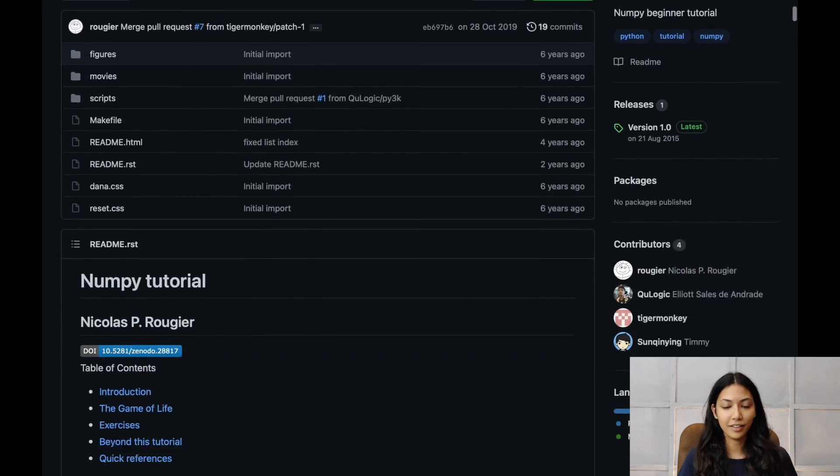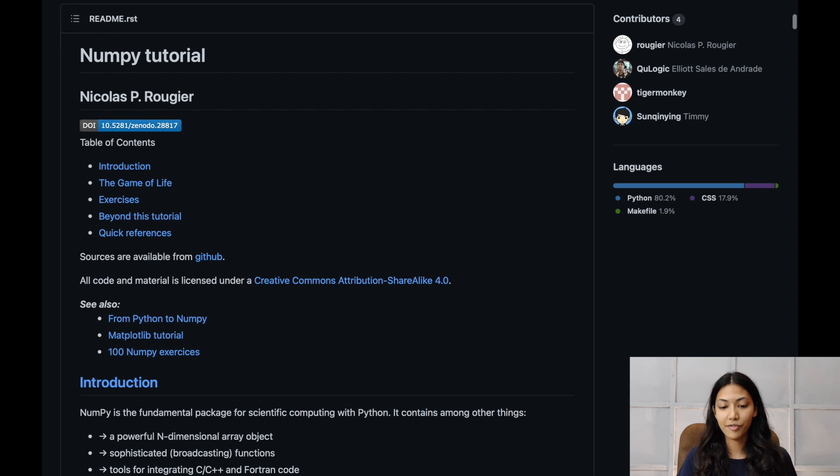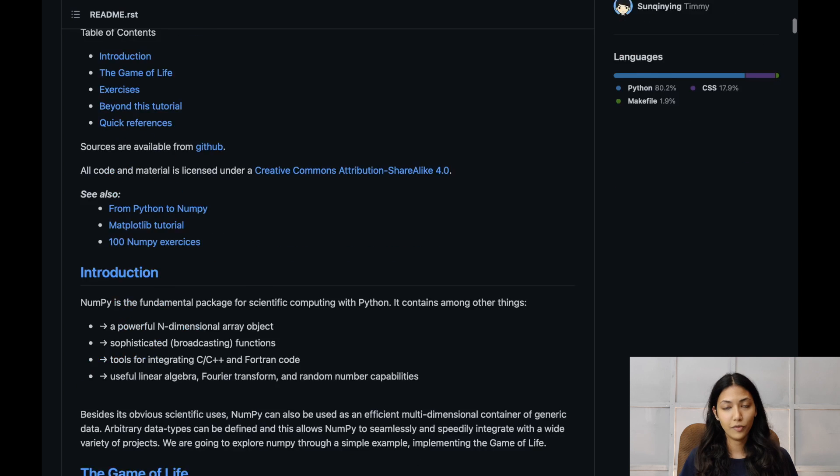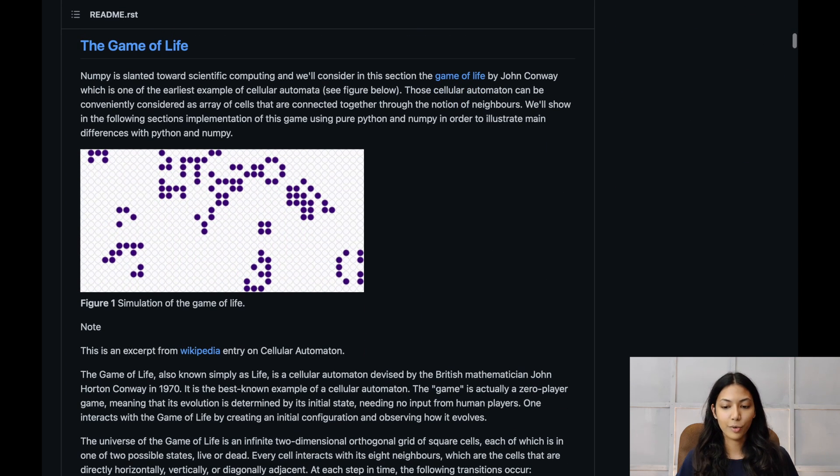The next NumPy tutorial is arguably one of the most interesting ones because it's based on a game. It's created by Nicholas and you can find it on GitHub, and it's based on the game of life. If you're not sure what the game of life is, it was actually created by a British mathematician called John Horton Conway in 1970 and this game is based around cellular automation.